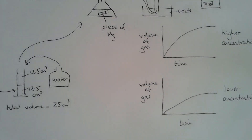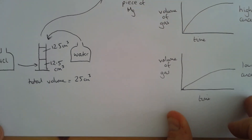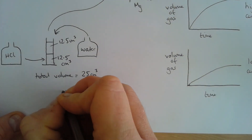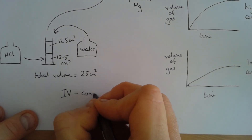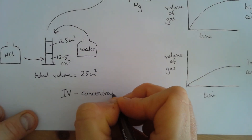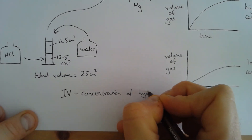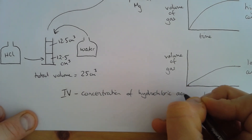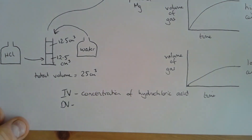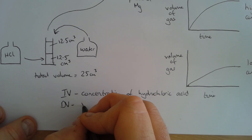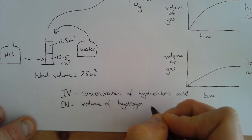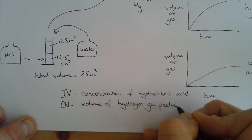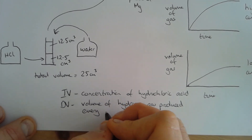The last thing we need to think about are the variables in this experiment. The independent variable is the variable that we are changing, and the variable that we change is the concentration of hydrochloric acid. The dependent variable is the one that we're going to measure, and we're measuring the volume of hydrogen gas produced every 10 seconds.